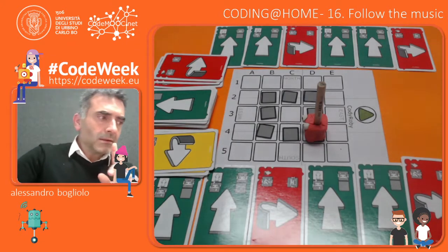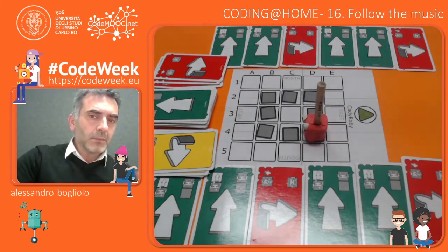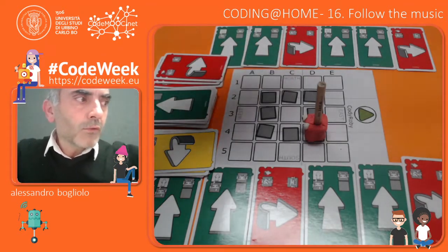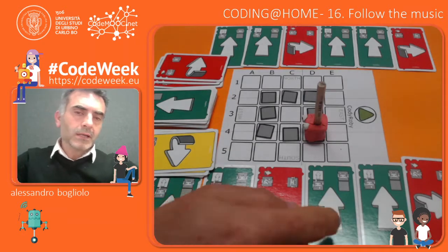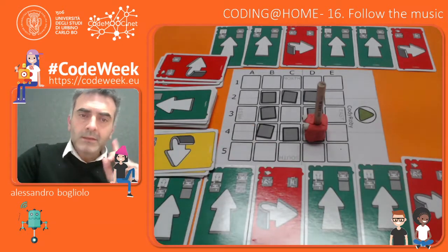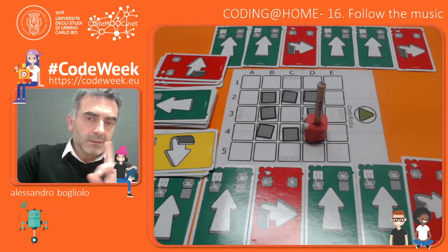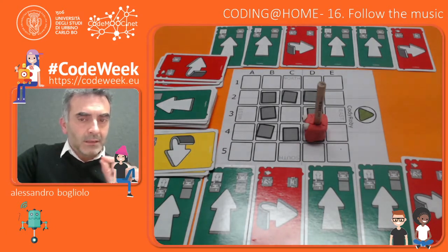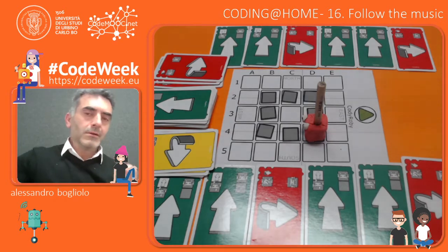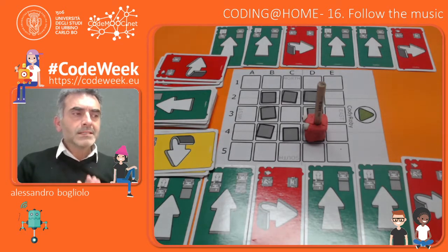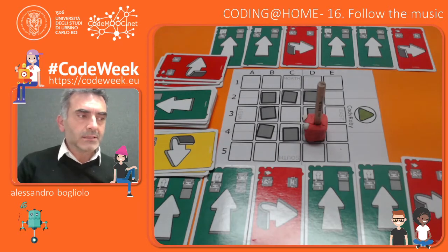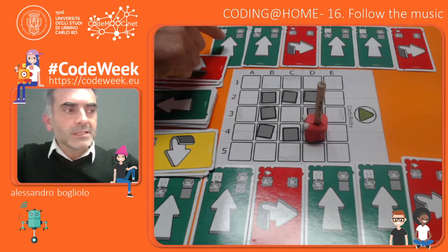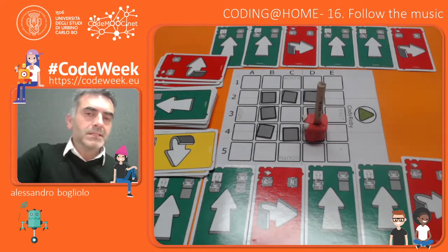And then we decided to read them rhythmically — like forward, forward, right, forward, forward, right, forward, forward, right, forward, forward, right — in order to hear the rhythm that he noticed. And to make it even more clear, we decided to associate sounds to the instructions. Instead of saying 'forward', we decided to say 'pa, pa, zoom' and so on, in order to hear the rhythm even better.